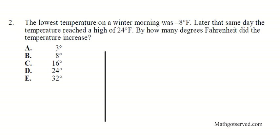We can just use a visual approach to solve this problem. So we have zero degrees. It was negative 8 below first and then this was the low and then the high later was 24. The distance from here to here is 8 degrees and then starting from zero the distance from zero all the way to the top is 24 degrees. So we just add them up, 24 plus 8 we get 32 degrees Fahrenheit.